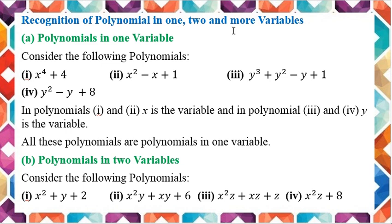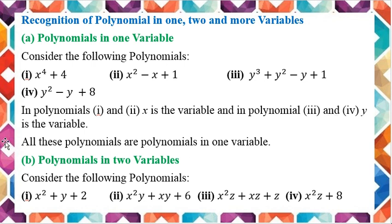Recognition of polynomials in 1, 2, or more variables. Polynomial in 1 variable: consider x to the power 4 plus 4 — there is only one variable, that is x, so it is a polynomial with a single variable. In example 2, x squared minus x plus 1 — again only x as a variable. In the third example, y cubed plus y squared minus y plus 1 — the variable is y, a single variable. Similarly, in the fourth example, y squared minus y plus 8. In polynomials 1 and 2, x is the variable; in polynomials 3 and 4, y is the variable. So all these are polynomials with one variable.